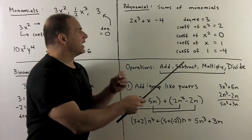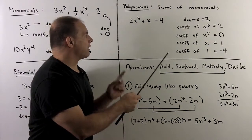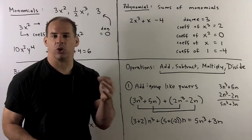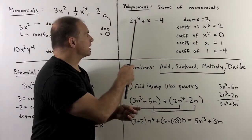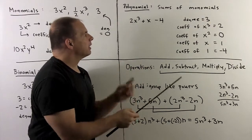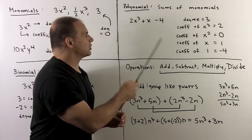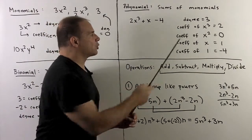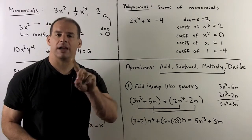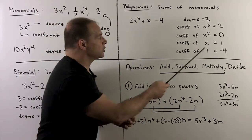In general, if I take any sum of monomials, that's what we'll call a polynomial. For instance, I have something like 2x cubed plus x minus 4. The degree is going to be the highest power. We have exponents 3, 1, and 0, so degree is equal to 3. The coefficient of x cubed is equal to 2. For the coefficient of x squared — note we don't have an x squared here — but we can think of that as 0 times x squared, so coefficient of x squared is equal to 0.